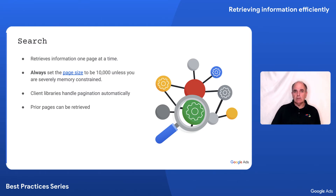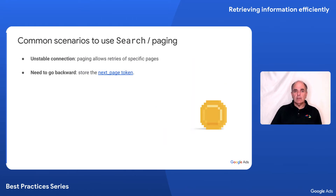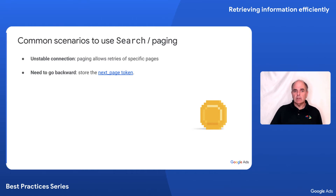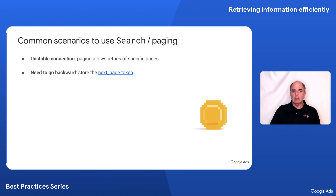What's also interesting about paging is that each page has a unique token associated with it. If you store that token, you can go back and retrieve a previous page. There are two common scenarios for using search. The first is if you have an unstable connection — say you are downloading 100,000 rows and the response in search stream keeps breaking; you would have to start the request again from the beginning. With search, you can retry a given page that has failed. The other scenario is when you need to go backwards: you use the page token and retrieve a previously downloaded page.